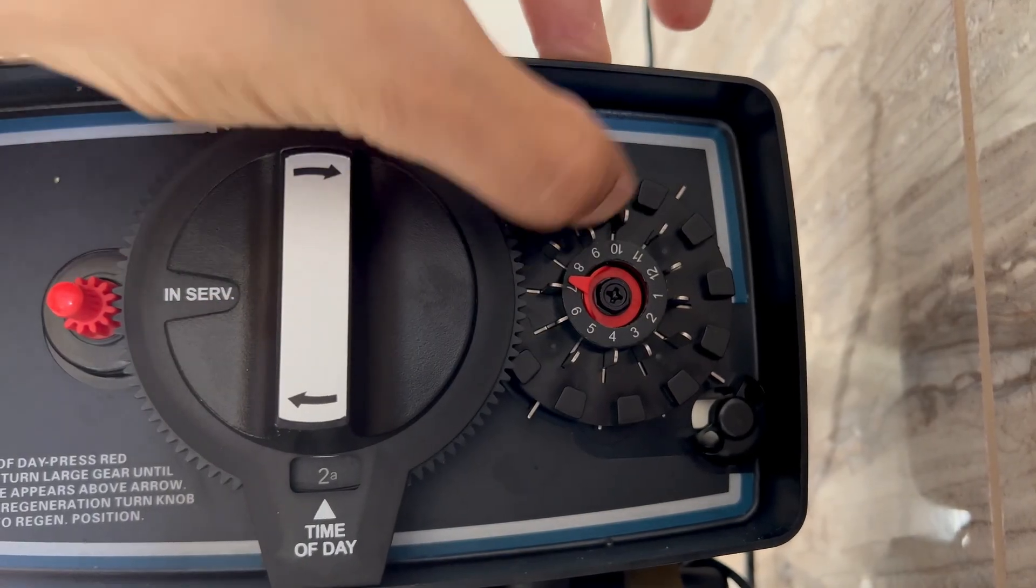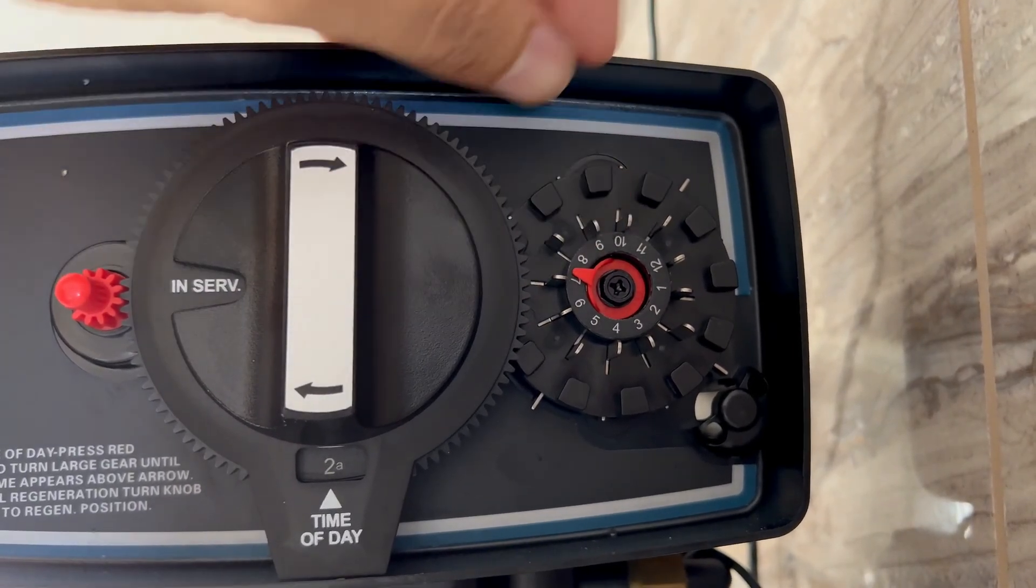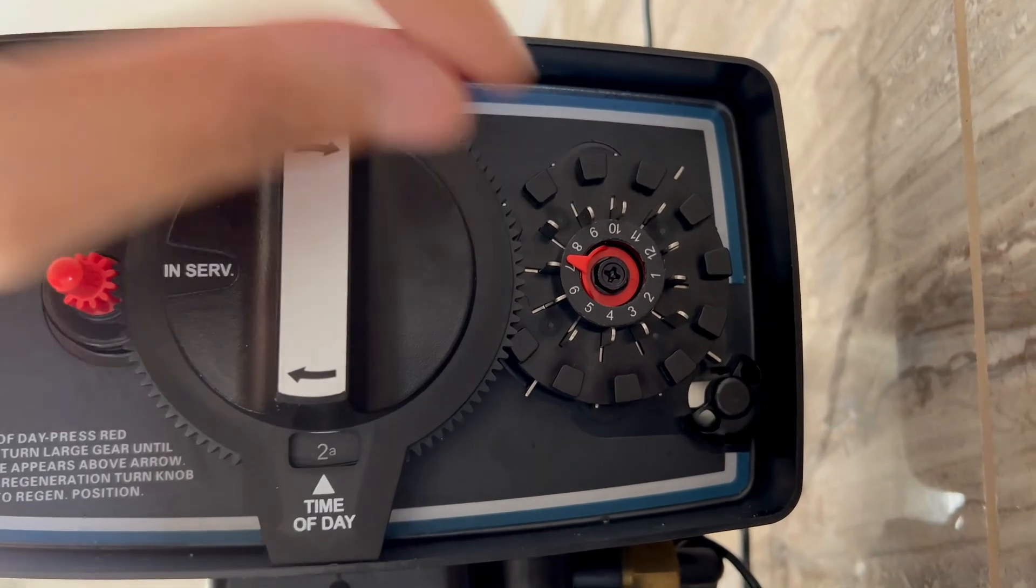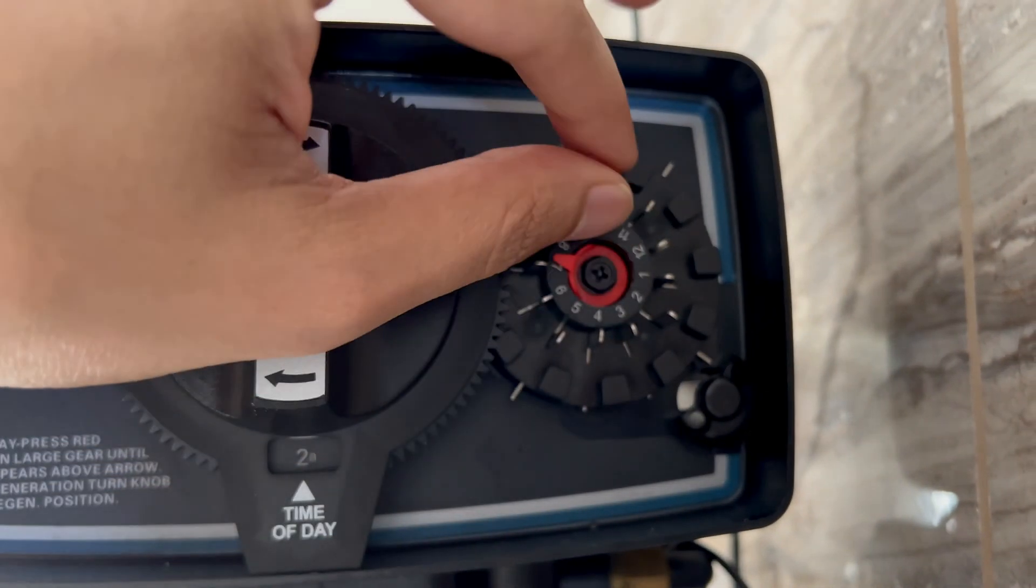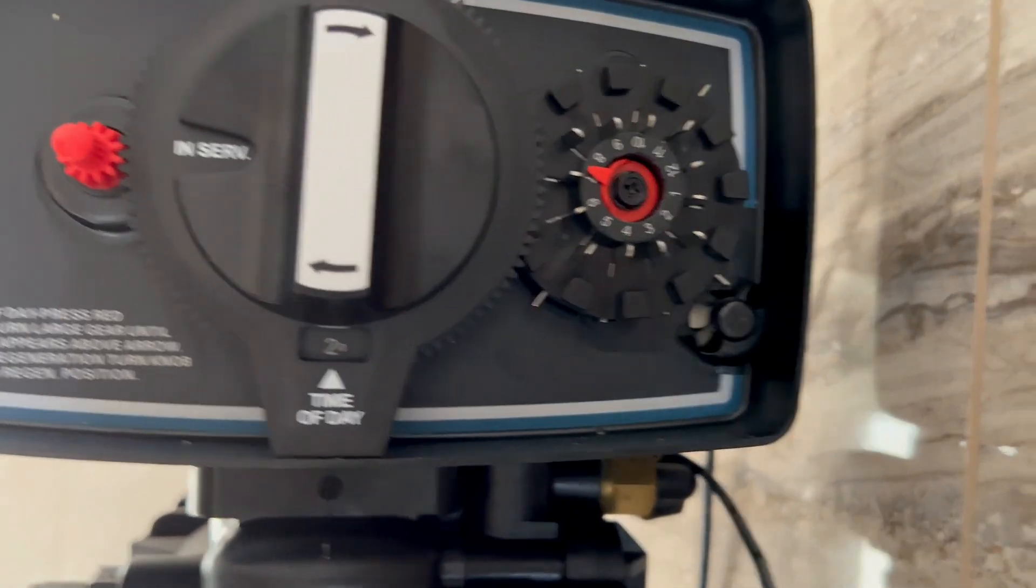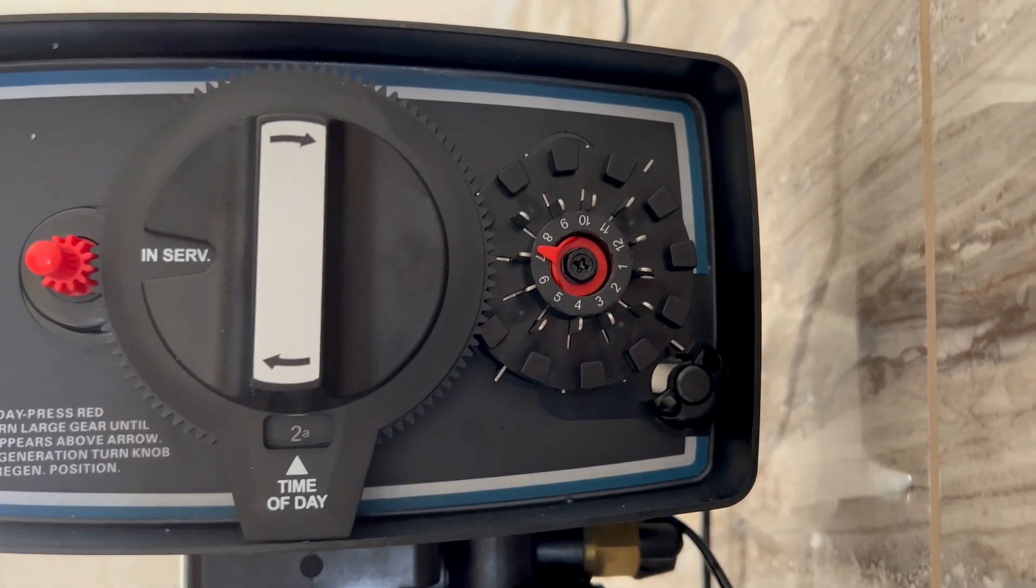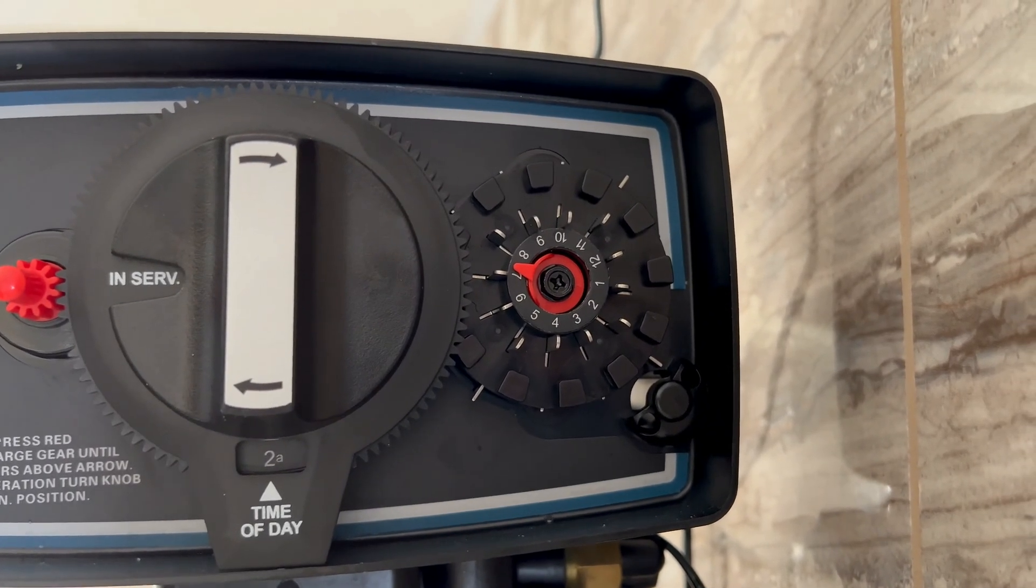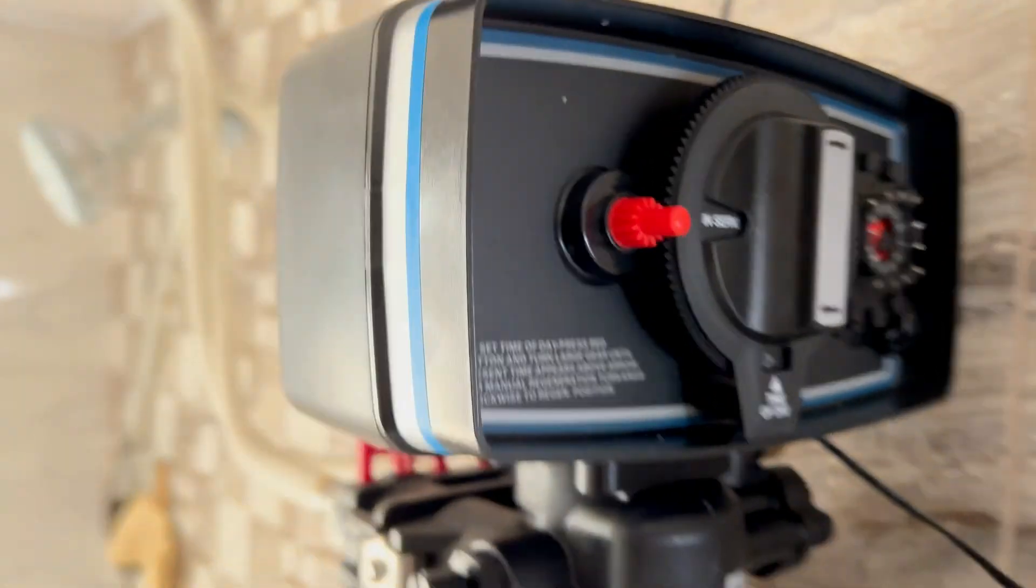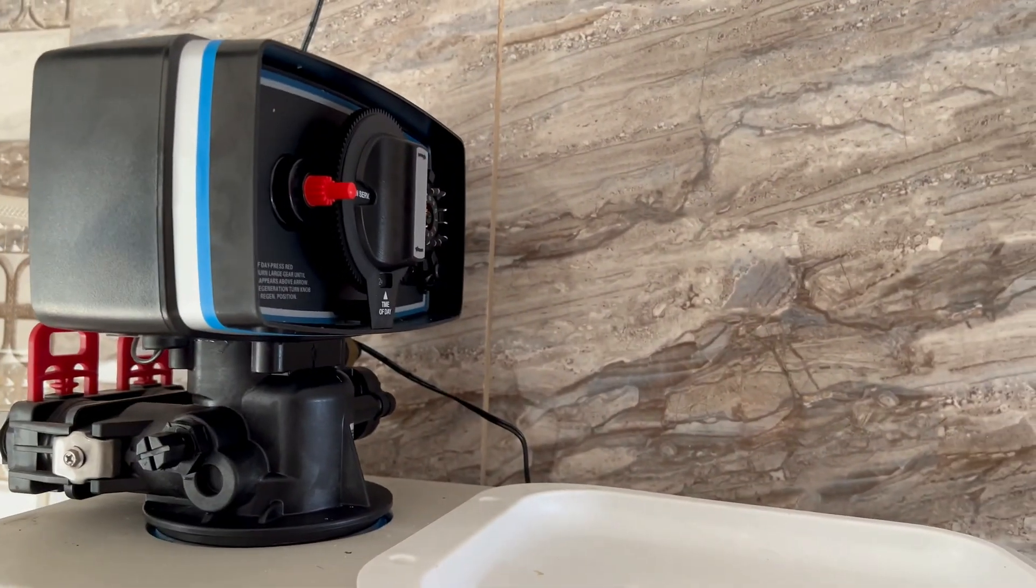The machine is designed to regenerate water at 2 a.m. based on its internal settings and it generally takes three and a half to four hours for the regeneration to complete and that's why it's good to have it at 2 a.m. but you can always change the time of the day to adjust it based on your schedule.